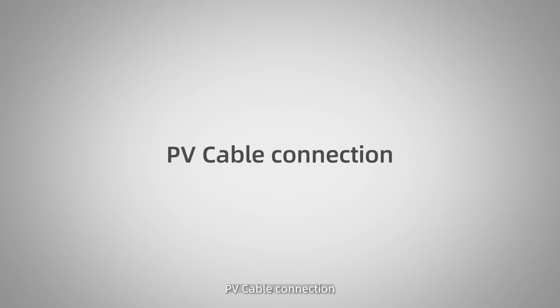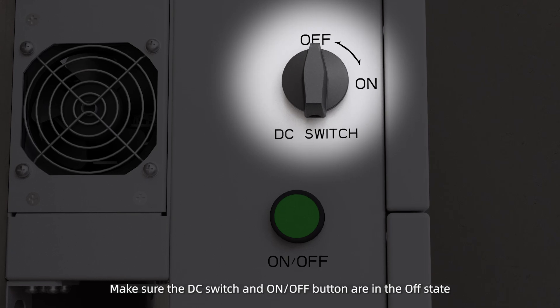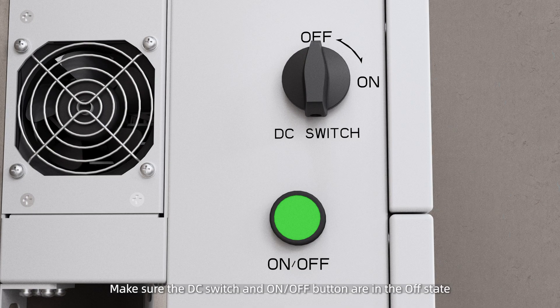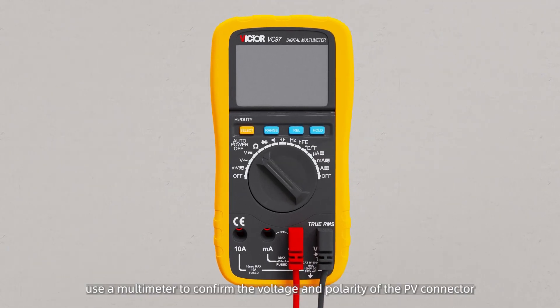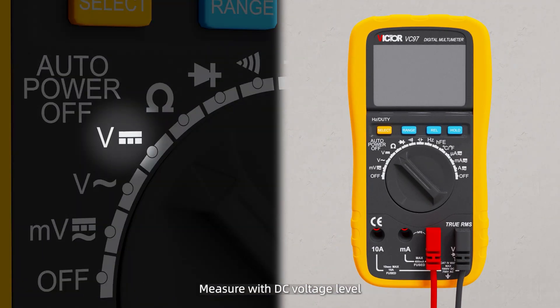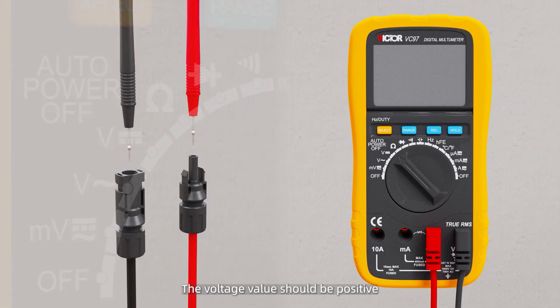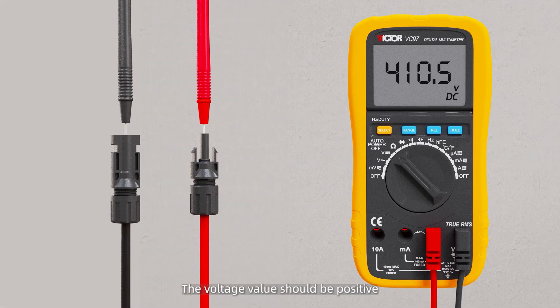PV side connection. Make sure the DC switch and on-off button are in the off state. Use a multimeter to confirm the voltage and polarity of the PV connector. Measure with DC voltage level. The voltage value should be positive and within the allowable range of the inverter.